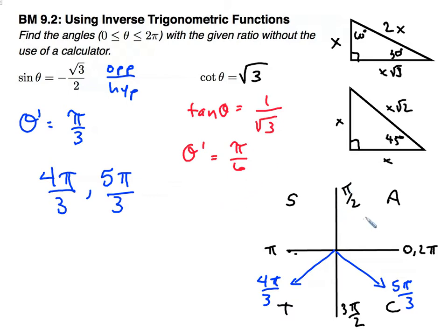Pi over 6 in radians is quadrant 1 and cotangent and tangent. They are positive in quadrants 1 and in quadrant 3.